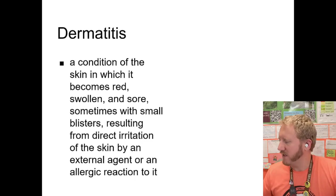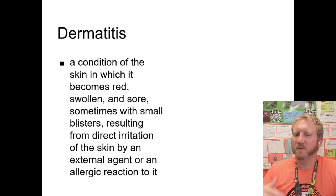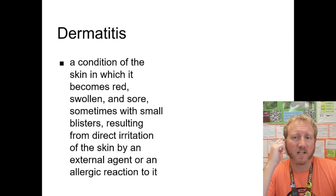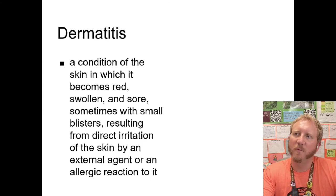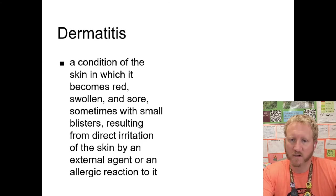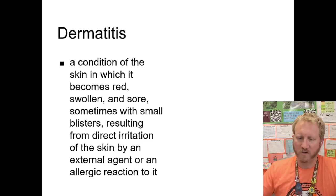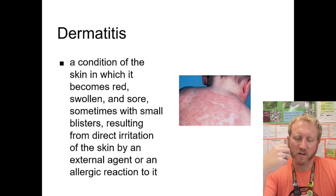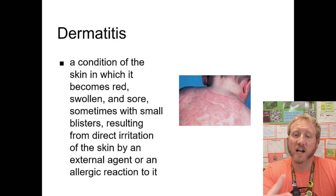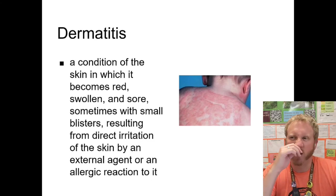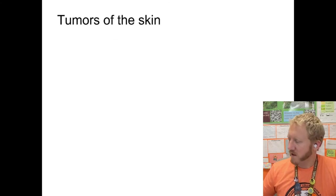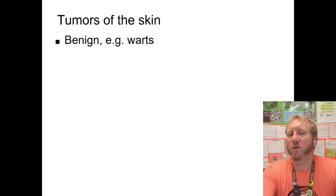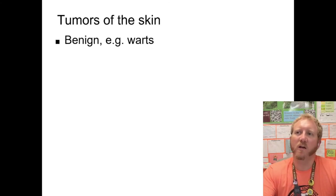Dermatitis is a condition where the skin becomes red, swollen, sore, and sometimes blistered, typically caused by direct irritation or an allergic reaction. For example, an allergy to fabric softener can cause a rash wherever skin contacts it. A reaction to poison ivy is very similar.